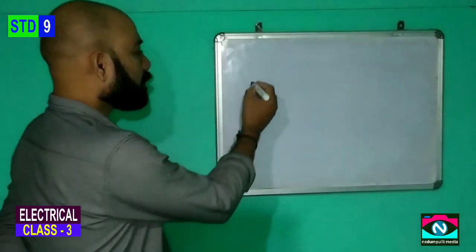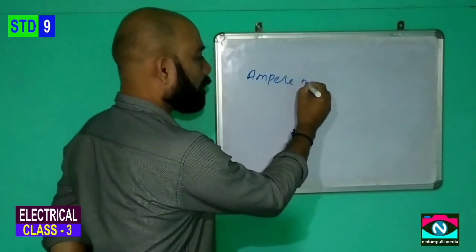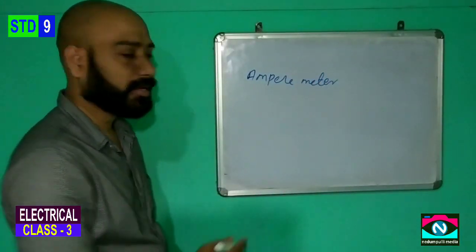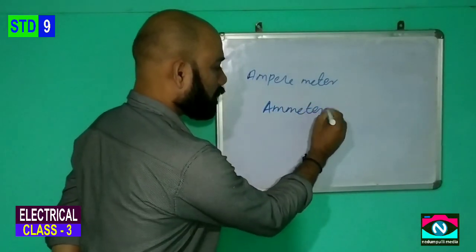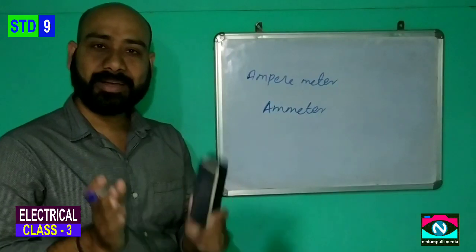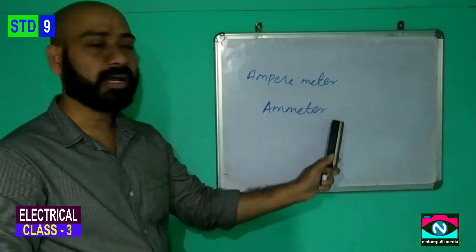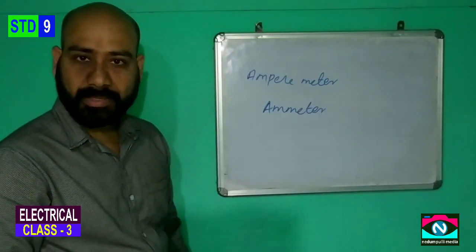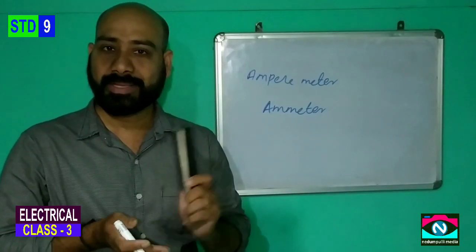The instrument used to measure electric current is called the Ammeter. We use the Ammeter as an instrument to measure electric current in a circuit.